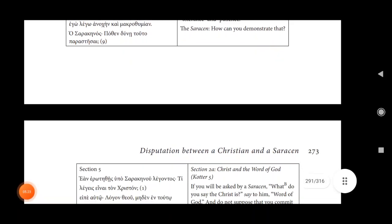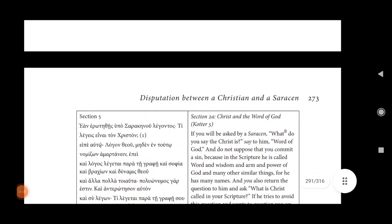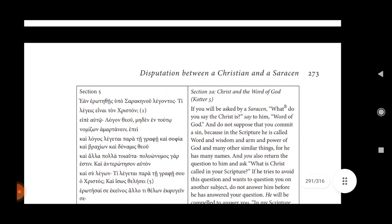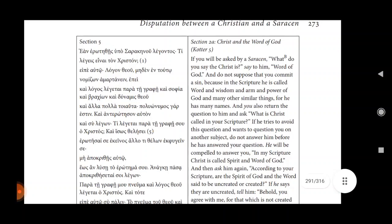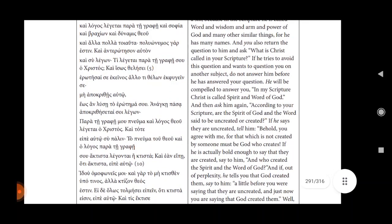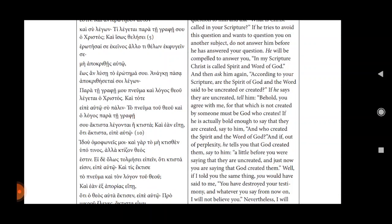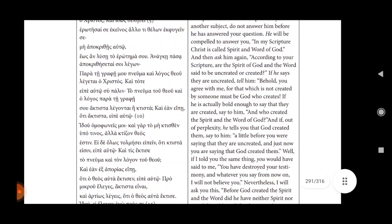Section 2a, The Christ and the word of God. If you will be asked by a Saracen, what do you say the Christ is? Say to him, word of God. And do those who suppose that you commit a sin? Because in the scripture, he is called word and wisdom and arm and power of God and many other similar things. For he has many names. And you also return the question to him and ask, what is Christ called in your scripture? If he tries to avoid this question and wants to question you on another subject, do not answer him before he has answered your question.